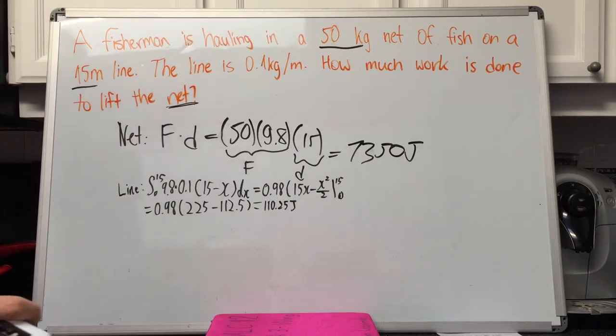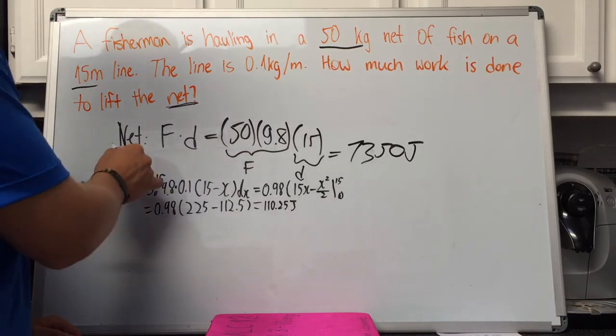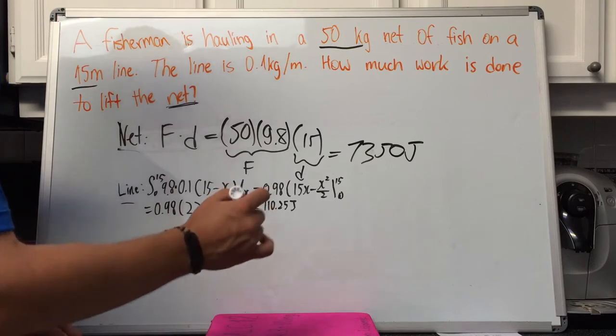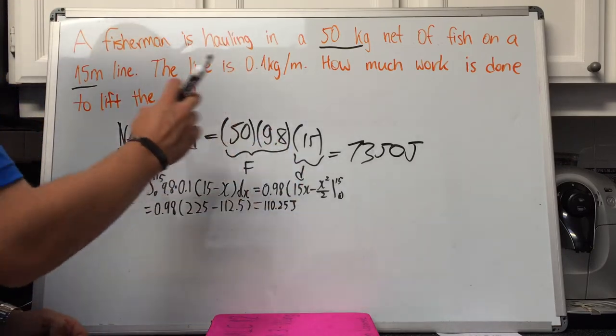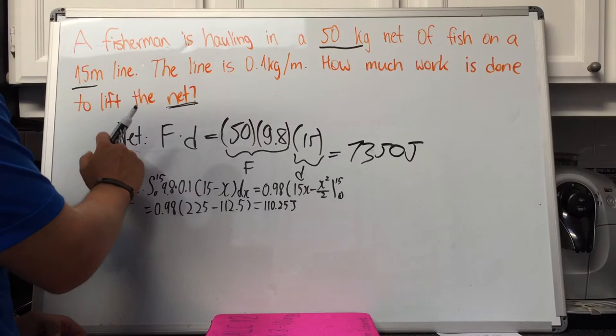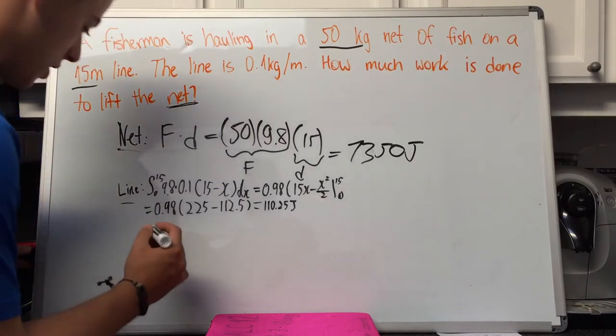Now for the final work done. We have the net and the line figured out individually. The total work done is the work to move the line and the net added together.